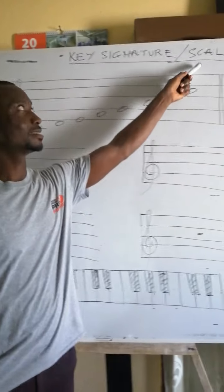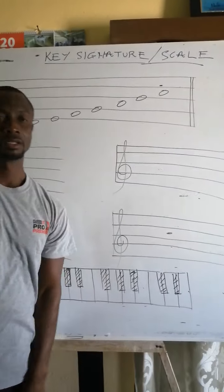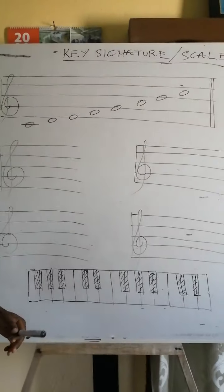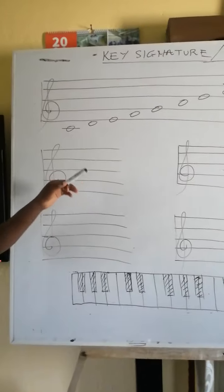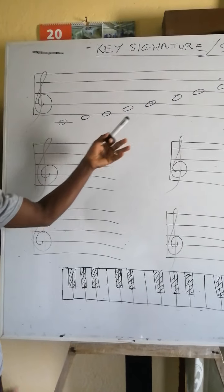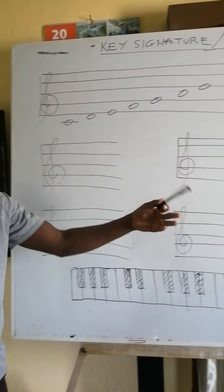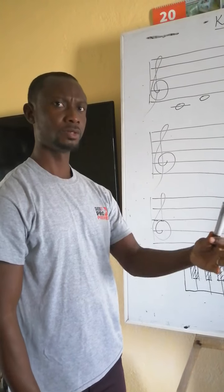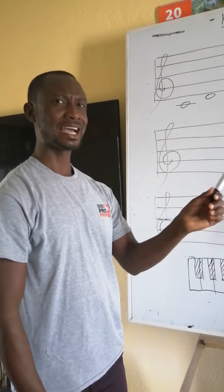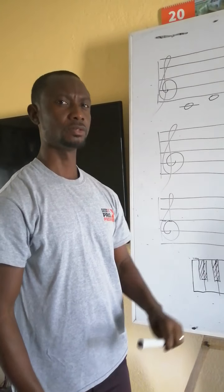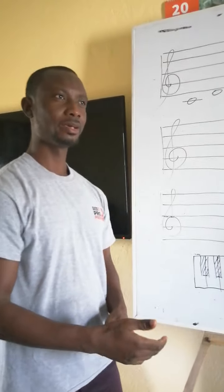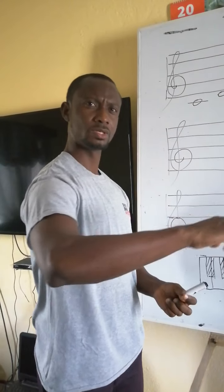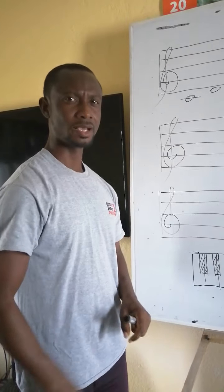I would do that in conjunction with scales. A scale is just a succession of notes, but we have a particular scale known as a diatonic scale. A diatonic scale is a succession of notes without any accidental.